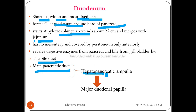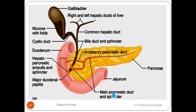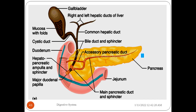The bile duct and main pancreatic duct together form the hepatopancreatic ampulla, which drains secretions and enzymes into the major duodenal papilla, and from there into the duodenum. The duodenum has a C-shaped appearance curving around the head of the pancreas.